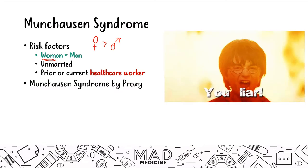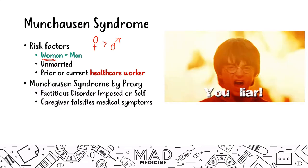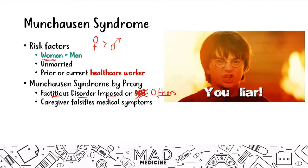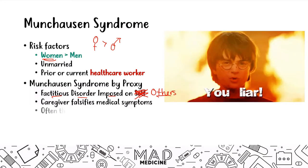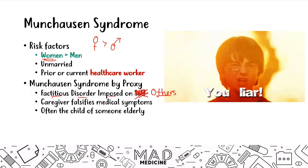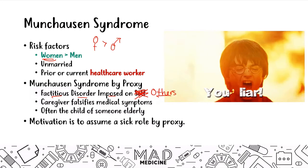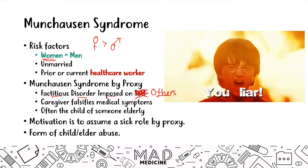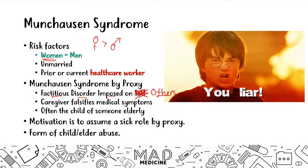There's another syndrome called Munchausen syndrome by proxy — also called factitious disorder imposed on others. In this case, a caregiver falsifies medical symptoms on behalf of someone else, often a child or elderly person. The motivation is usually to assume a sick role by proxy. This is actually a form of child or elder abuse, so if you suspect it, you must report it. As a medical student and physician, you are a mandatory reporter — report it to the authorities.